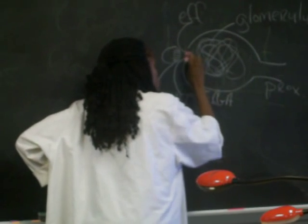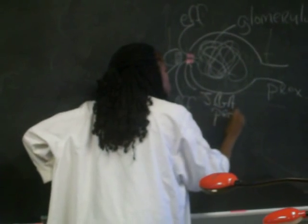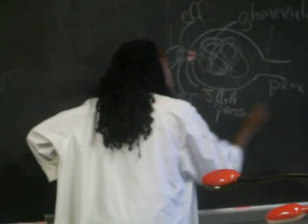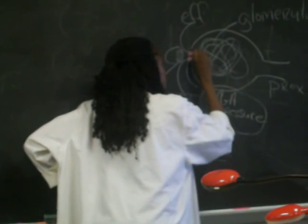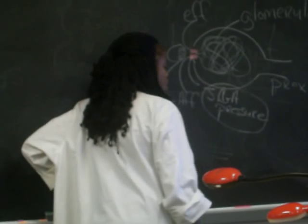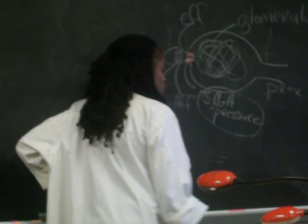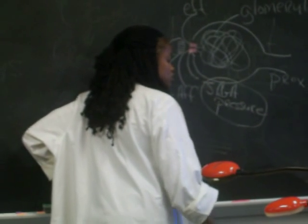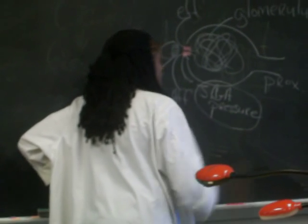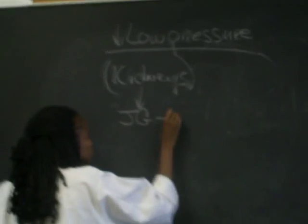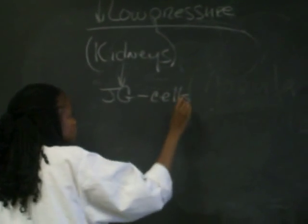So these cells are sensing pressure. Those are my mechanoreceptors. They're sensing pressure. So anytime I have a decrease, they're going to sense that. And it will allow these cells to release the renin. So you know where that's coming from now. So you say your JG cells are stimulated to release the renin.